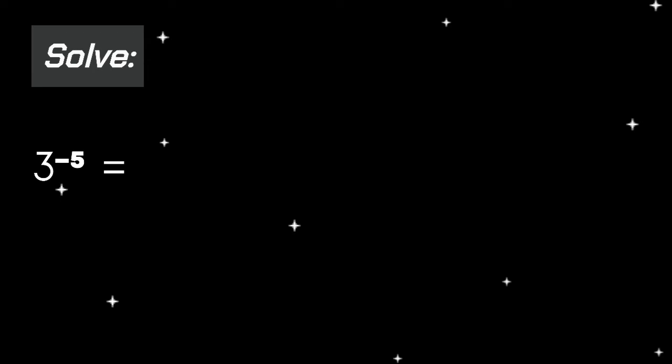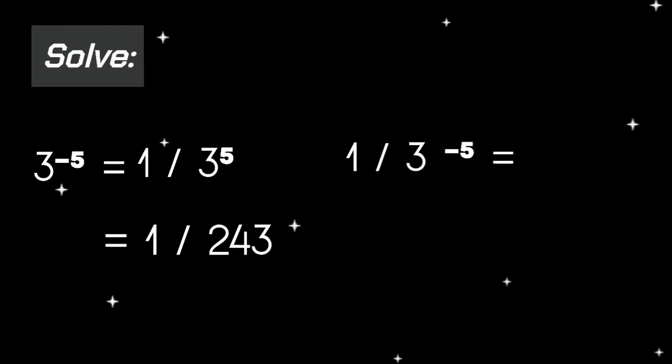Now let's try solving some problems. First, 3 raised to the power of negative 5. The first thing to do is to separate it as 1 over 3 to the fifth, which equals 1 over 243. What if the situation was 1 over 3 raised to the power of negative 5? Just separate the number that has the negative exponent, so that would be 3 raised to the power of 5, which equals 243.